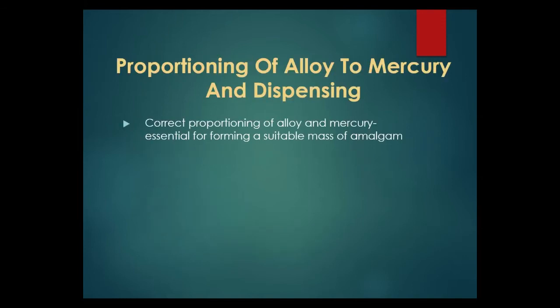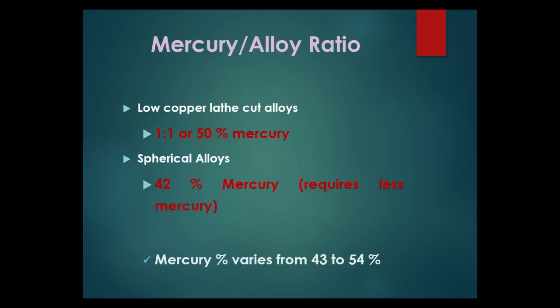Proportioning of alloy to mercury: correct proportioning of alloy and mercury is essential for forming a suitable mass of amalgam. Mercury-alloy ratio for low copper lathe-cut alloys is 1:1 or 50% mercury. Spherical alloys require 42% mercury, meaning they require less mercury. Mercury percentage varies from 43% to 54%.